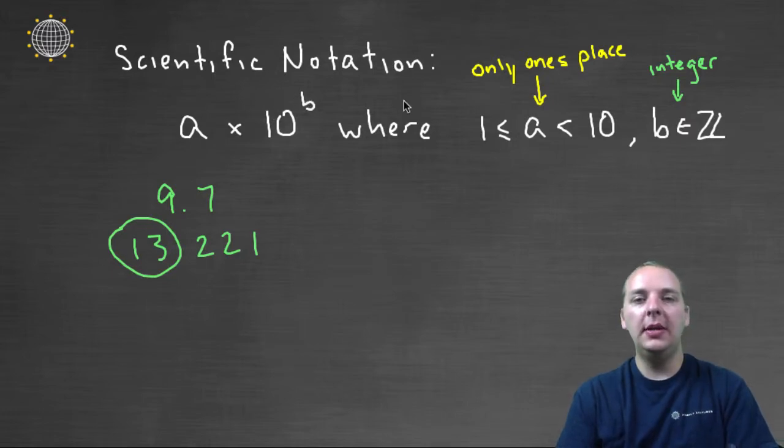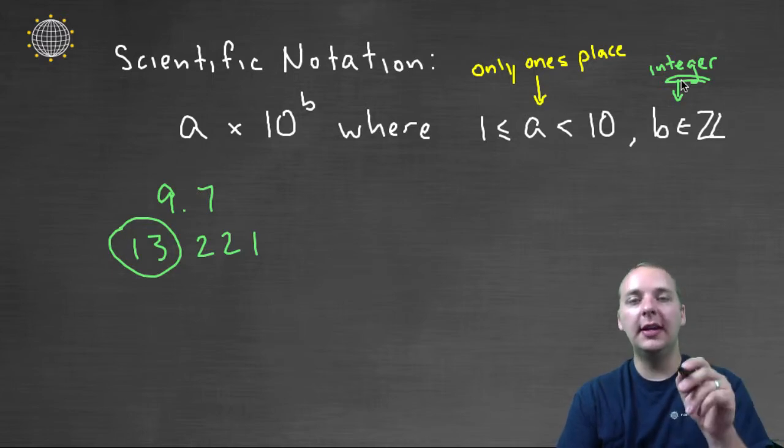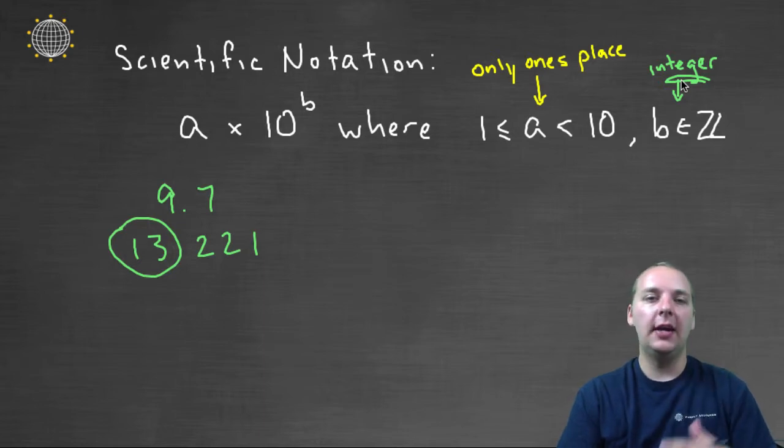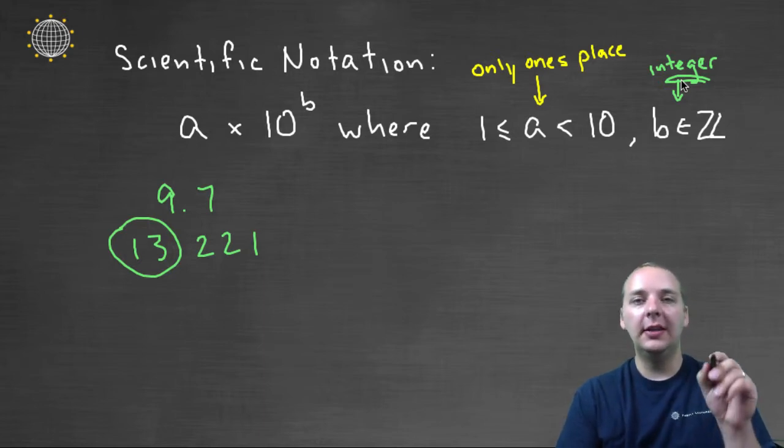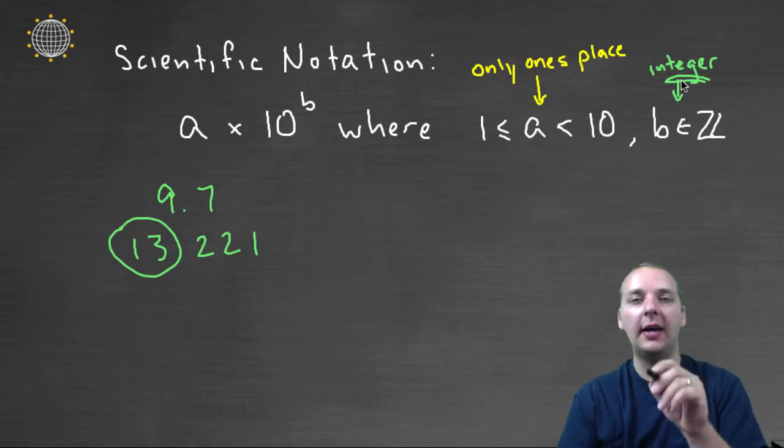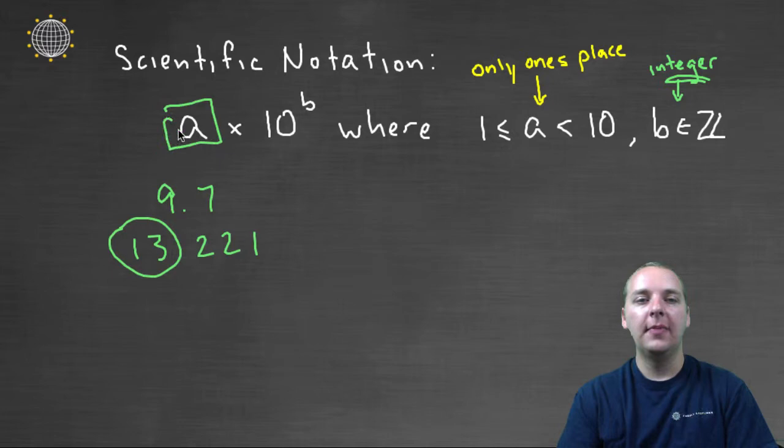And then the reason we want b to be an integer is because it's super easy to multiply by multiples of 10. Every time you multiply by 10, you're going to move a decimal place. So if you have times 10 to the fifth, then you're only moving the decimal place 5 times. So basically you're keeping a, and then moving the decimal place left or right, depending on whether your integer b is positive or negative.